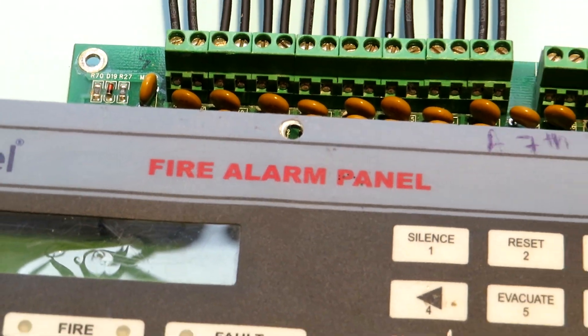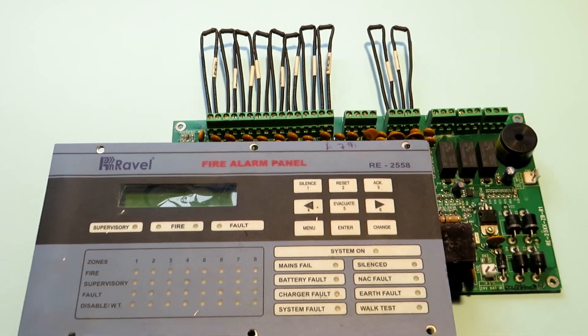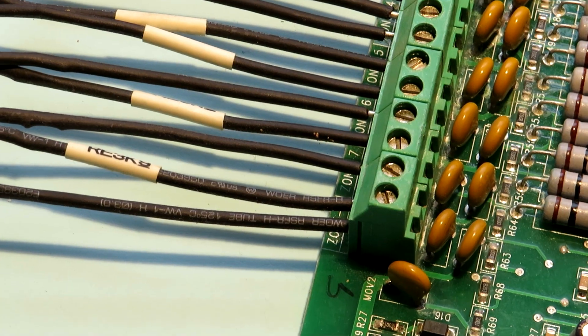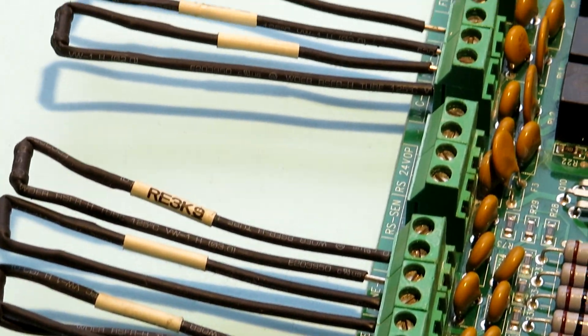So here I have with me the popular Ravel fire alarm panel. I'll be using this as an example panel to give you guys a rough idea of where your zone cables connect to in the panel.